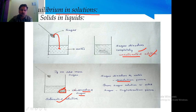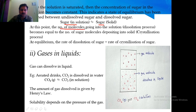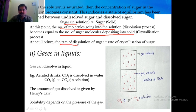In a saturated solution, sugar in solution converts back to solid sugar and solid sugar converts into solution. At equilibrium, the number of molecules going into solution equals the number depositing as solid. The rate of dissolution of sugar equals the rate of crystallization of sugar.